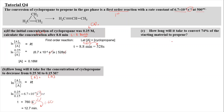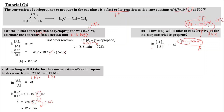For part C, how long will it take to convert 74% of the starting material to propane? The starting material cyclopropane initially has 100%. Since 74% has been converted into propane, what's left of the starting material is 26%. So we still use ln(A0/A) equals KT, where our initial value is 100 and the concentration after time T is 26%.